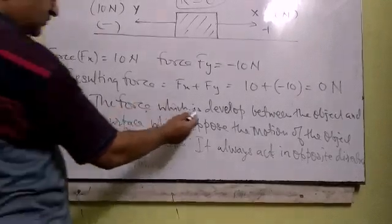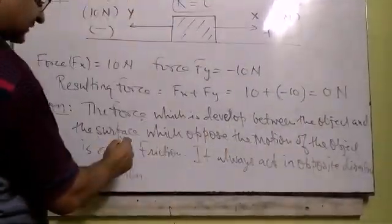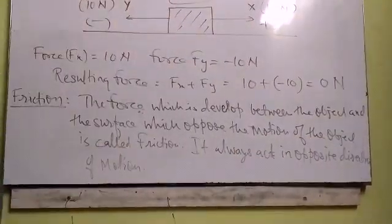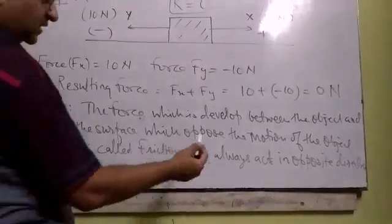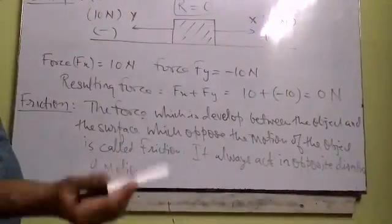Frictional force: the force which is developed between the object and the surface which opposes the motion of an object is called frictional force. Since it always acts in the opposite direction of motion, that is why it is a negative force.